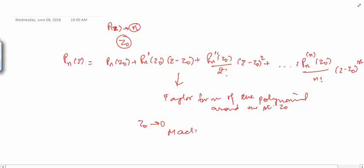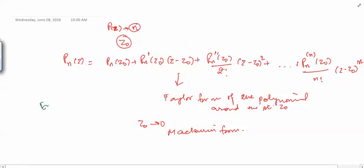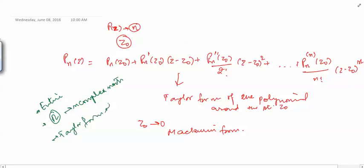If z₀ = 0, this is called the Maclaurin form of the polynomial. So we have learned about polynomial functions: they are entire functions, a polynomial of degree n has n complex roots, and we know how to write the Taylor form. These are things we will use again and again in complex analysis. In the next video we will study rational functions. Thank you.